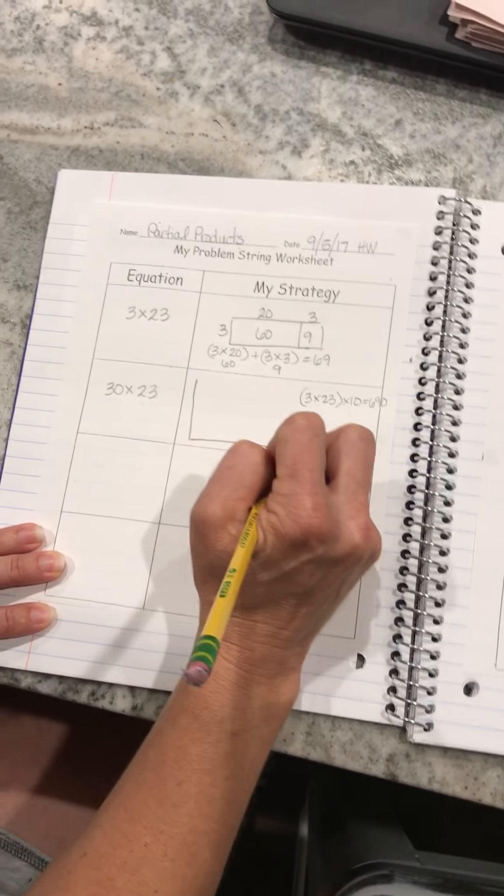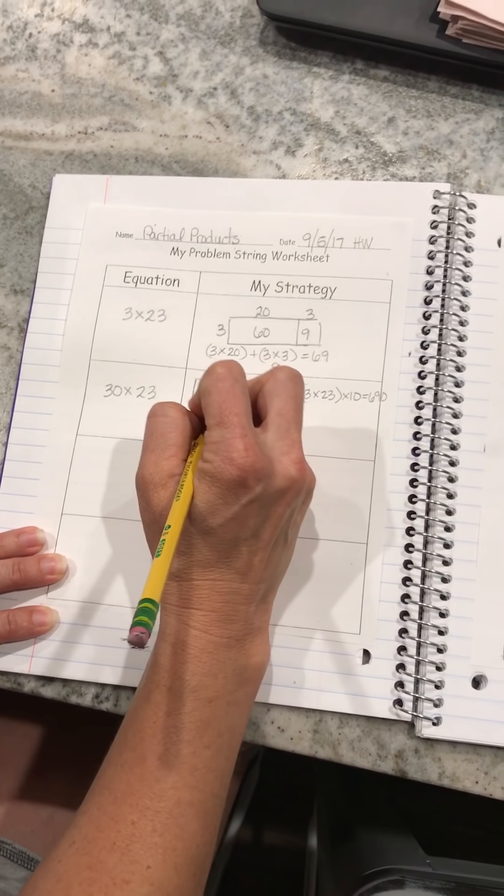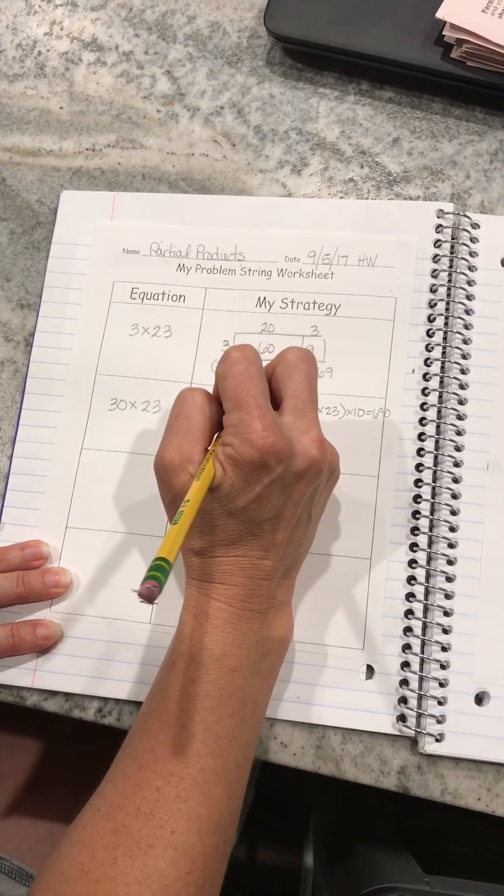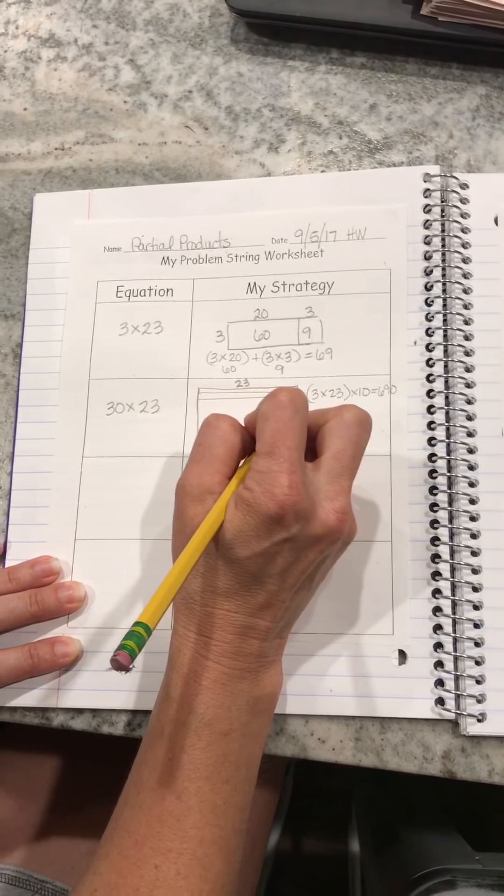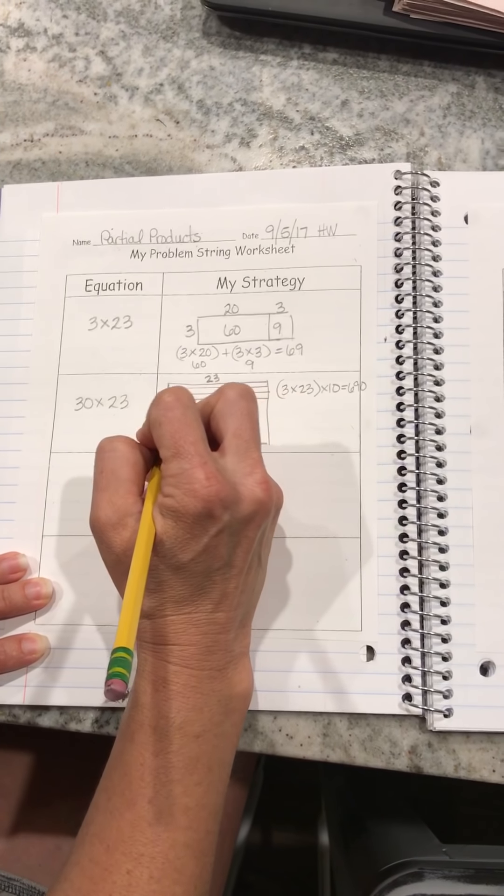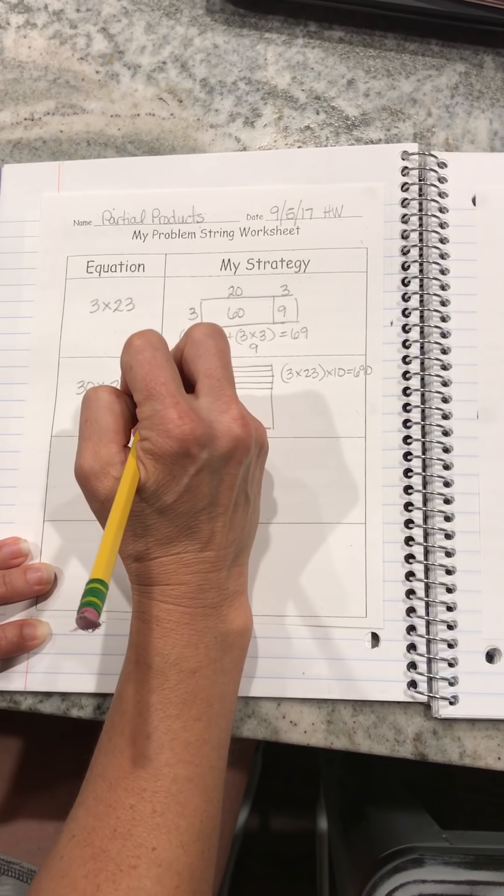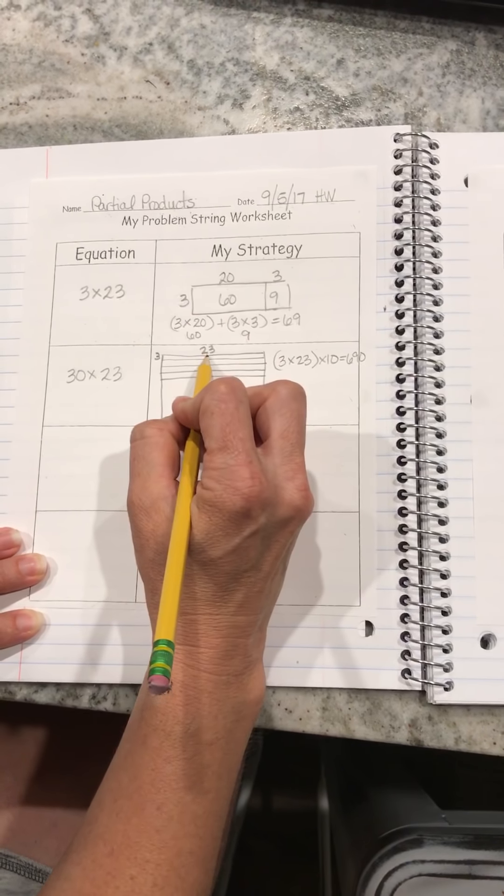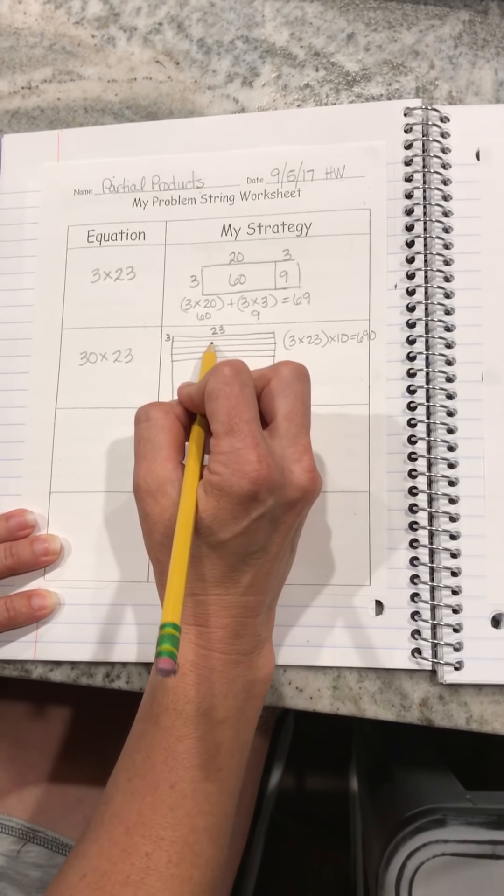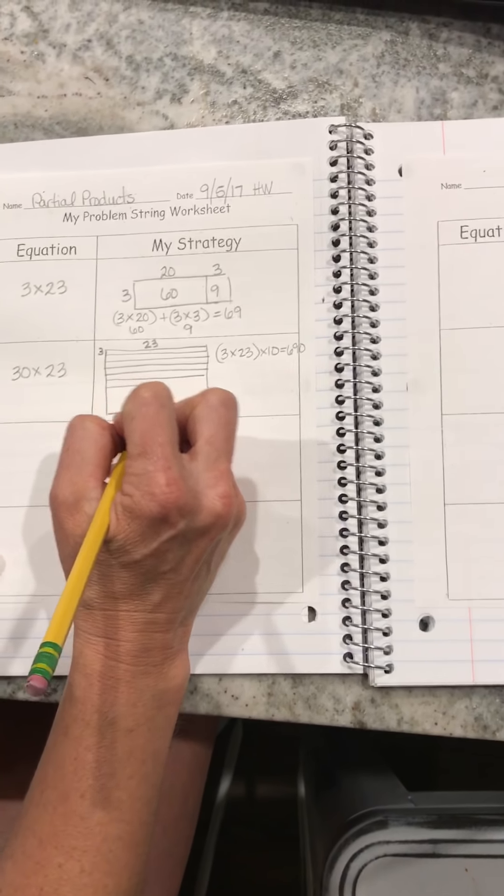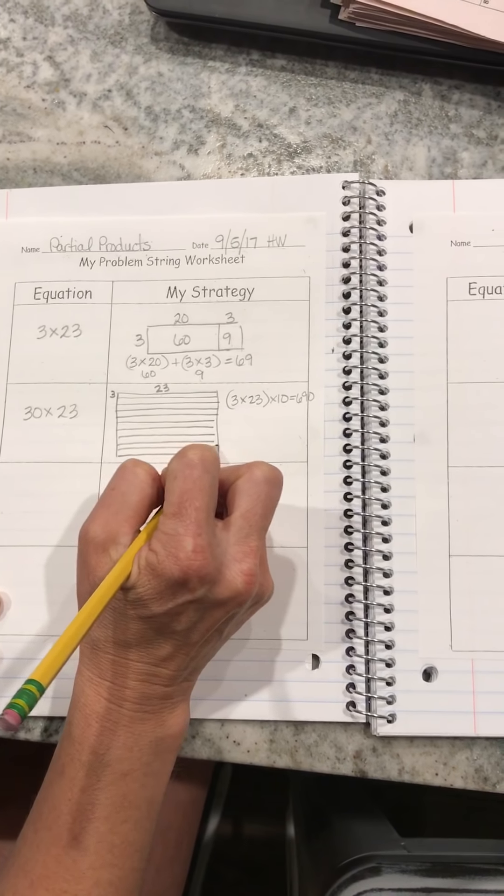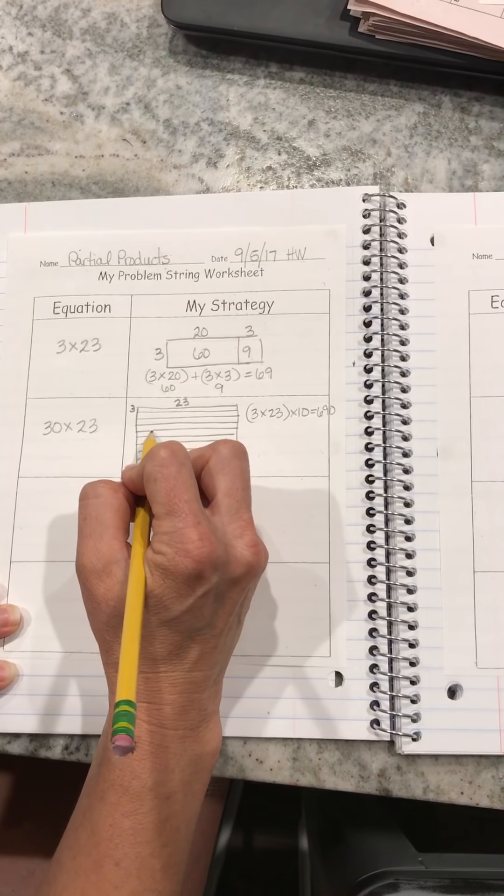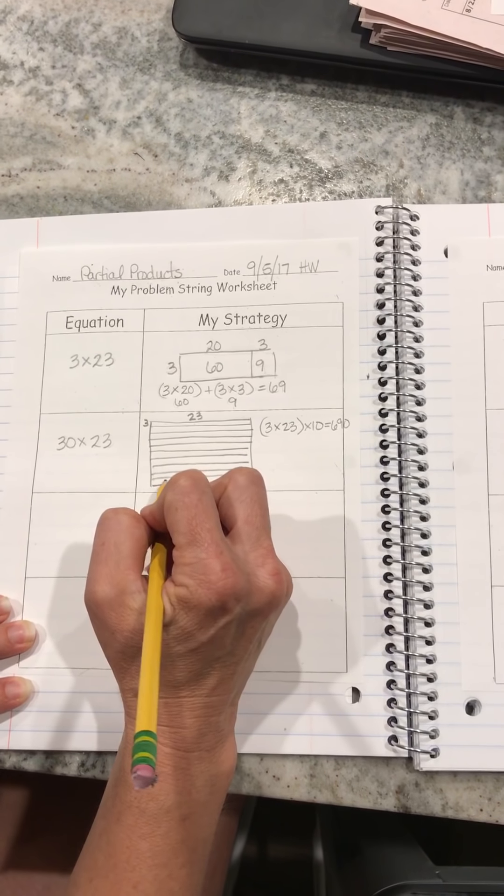You can also do it if you're more of a visual learner. I can take 23 up here and make this into 10 different rows. So I know that I have a 3 by 23, which is 69. If I make 10 of those, 1, 2, 3, 4, 5, 6, 7, 8, 9, 10.